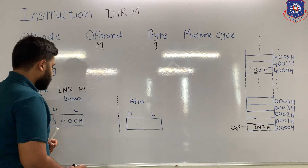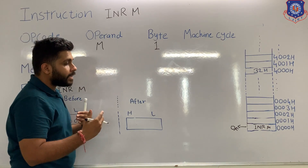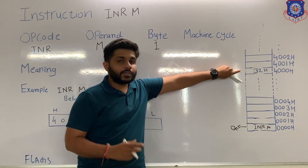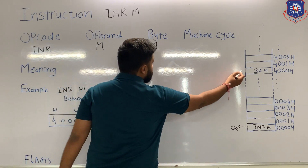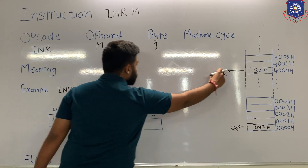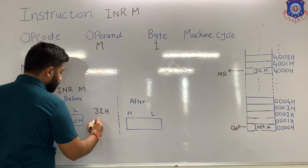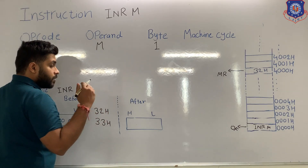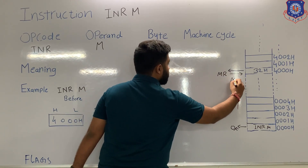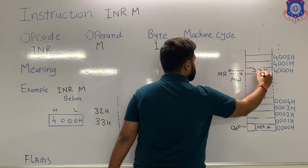During the execution, the content of the memory location will be incremented by 1. The processor cannot directly increment the content of the memory location — it must first read that data. So, to increment, the microprocessor will first read the data by performing a memory read. When the microprocessor performs the memory read, 32H will be transferred to the microprocessor. After that, the microprocessor will increment this number by 1, so it will become 33H. After the number is incremented, the processor will transfer the data back to the same memory location by performing a memory write, and the content of memory location 4000H will be changed to 33H.